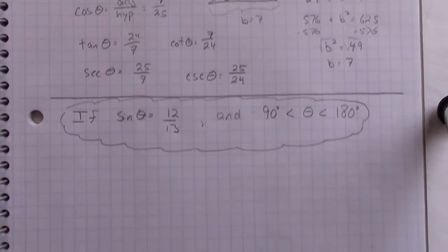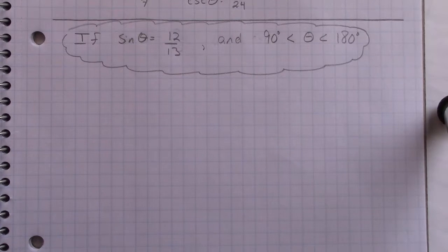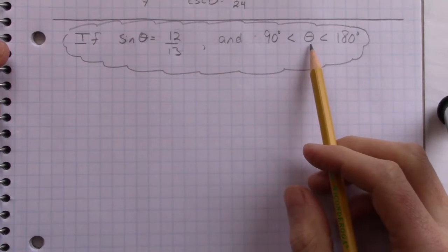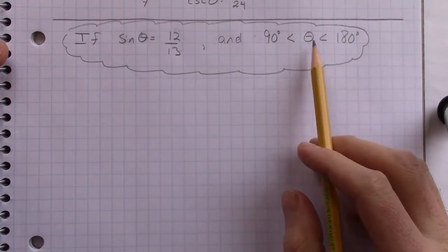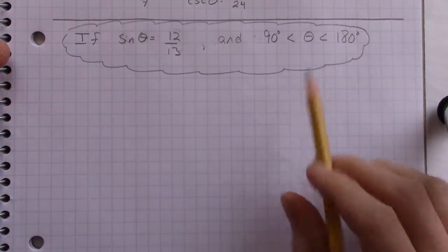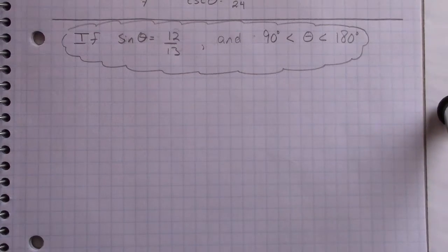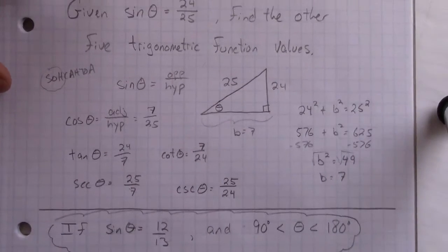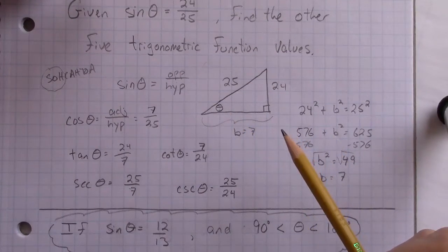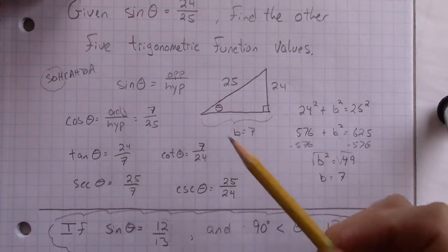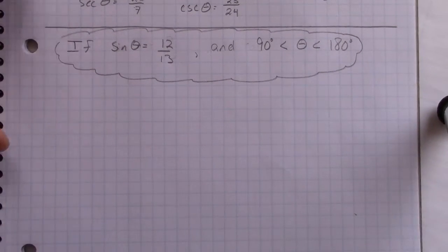But the other way I've seen it done is this way. If sine of theta equals 12 over 13, and we've got theta between 90 degrees and 180 degrees. So 90 degrees is less than theta, which is less than 180 degrees. And that gives us an important piece of information. Because now when we draw that triangle, we need to think about it differently. That wouldn't work here. Like, if theta was between 90 and 180, this would be a different looking triangle, wouldn't it?